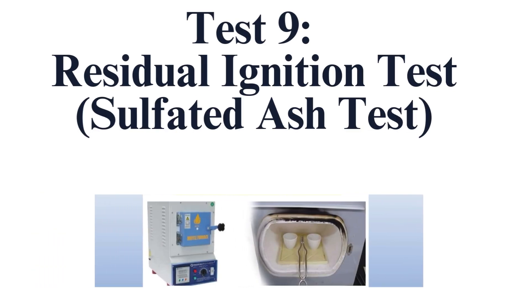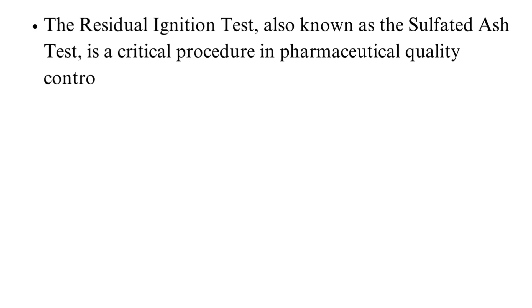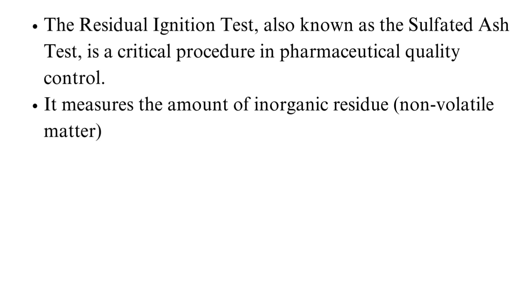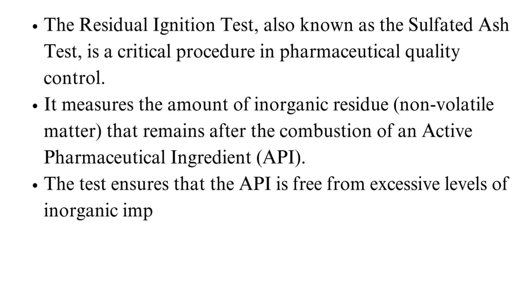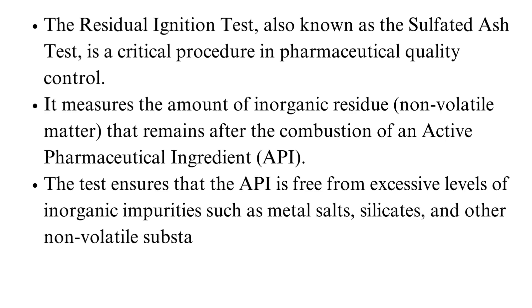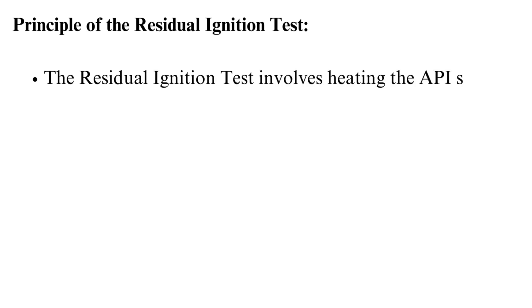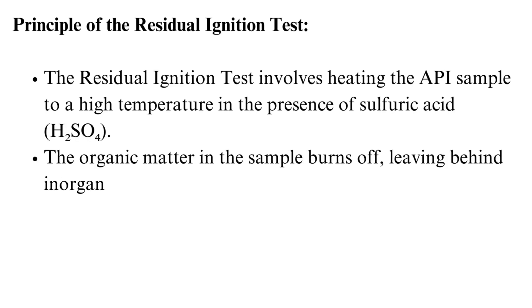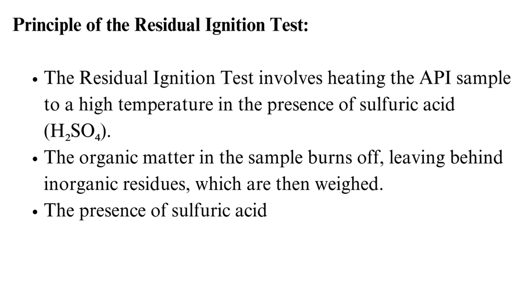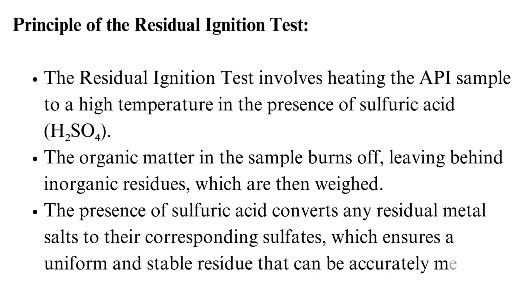Test 9: Residual Ignition Test. The residual ignition test, also known as the sulfated ash test, is a critical procedure in pharmaceutical quality control. It measures the amount of inorganic residue that remains after the combustion of an API. The test ensures that the API is free from excessive levels of inorganic impurities such as metal salts, silicates, and other non-volatile substances that could affect the safety, efficacy, and stability of the final drug product. The test involves heating the API sample to a high temperature in the presence of sulfuric acid; the organic matter burns off, leaving behind inorganic residues, which are then weighed. Sulfuric acid converts residual metal salts to their corresponding sulfates, ensuring a uniform and stable residue.